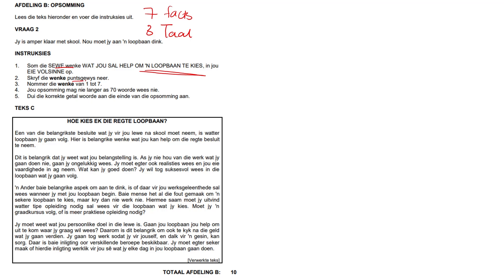They want punte gewees, guys — that means numbered points. They want no more than 70 words, and they want you to write down that total when you are finished. So you'll literally write at the bottom of your Opsomming 'woorde' and whatever the word count is. Please stick to the word count, because if you go over the word count, they may not read the words that are over 70.